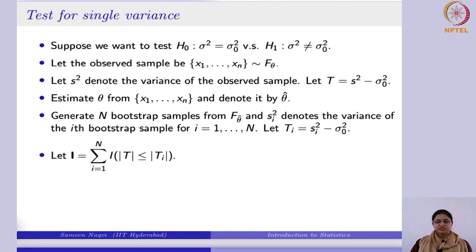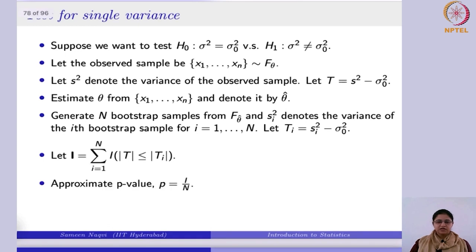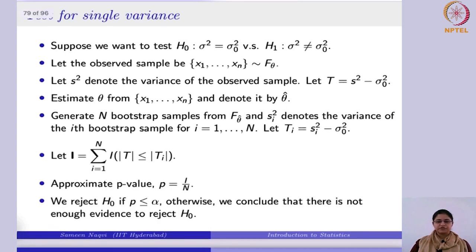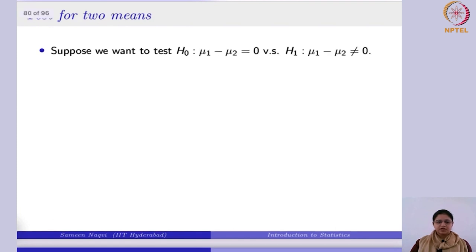Finally, you will count the number of times the bootstrap test statistic is as extreme or more extreme than the observed test statistic, find the p-value as that proportion, and you would reject the null hypothesis accordingly. It is again very simple and straightforward.